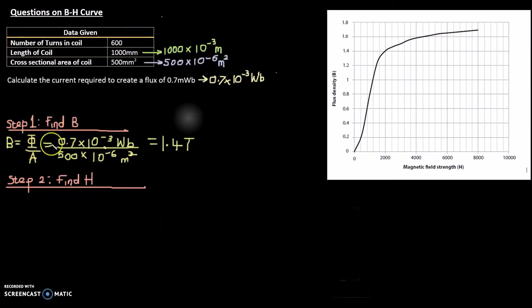Now step one, after converting, we need to work out the flux density. We have our flux which is in weber and we have our area which is in meter square, so our flux density is flux divided by area, which will give us 1.4 Tesla.